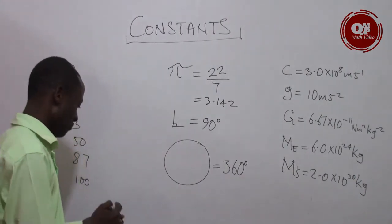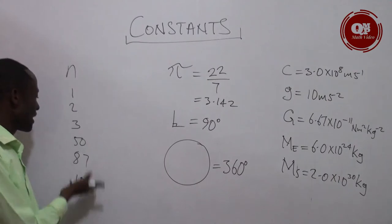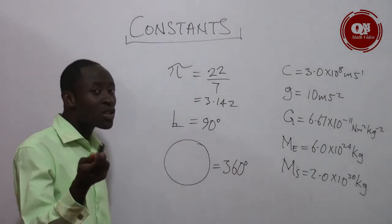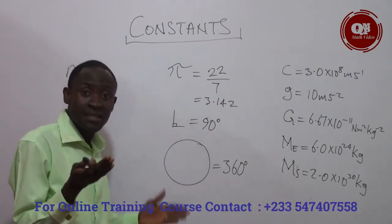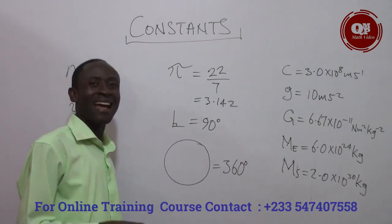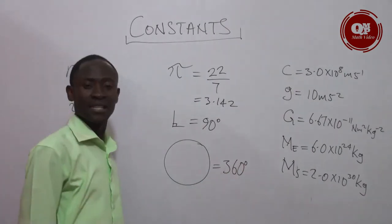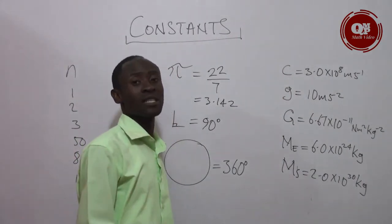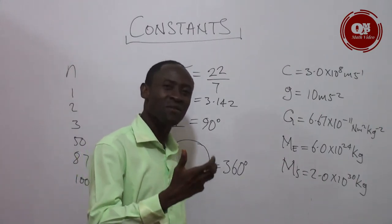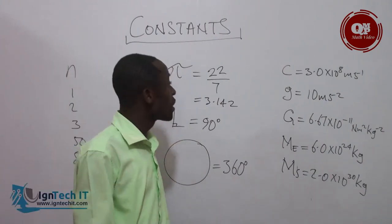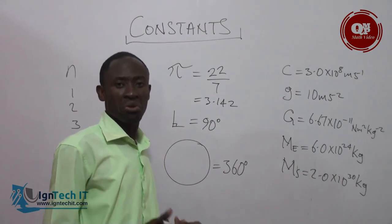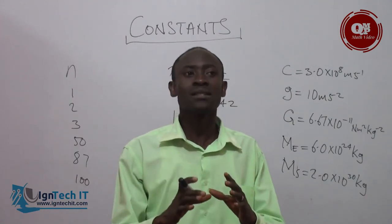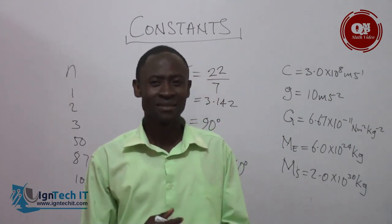Now, there are little things I would like you to consider. When you look at the very first form of constant, nothing was attached, yet it is a constant. But others have units like degrees attached, and they are still constant. The third form of constants has their respective units attached, yet they are different — but they are constant, because the numbers do not change. So a constant is simply a number, whether or not a unit is attached. This is where I will bring this lesson to a successful end. Thank you.